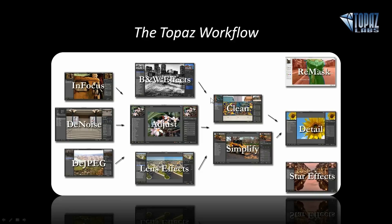We have 11 programs here, but I've never had a reason to take an image into all 11. I tend to start with Denoise most of the time, then hop into Black and White Effects or Adjust, then Lens Effects, and maybe go into Clean or Simplify if I want a photo-artistic image. Usually I skip over Clean and Simplify and go straight to Detail. Lately I'm using Star Effects quite a lot for light sources. And Remask I use when I need selective adjustments or to replace a background. It's not necessary to use every single program.